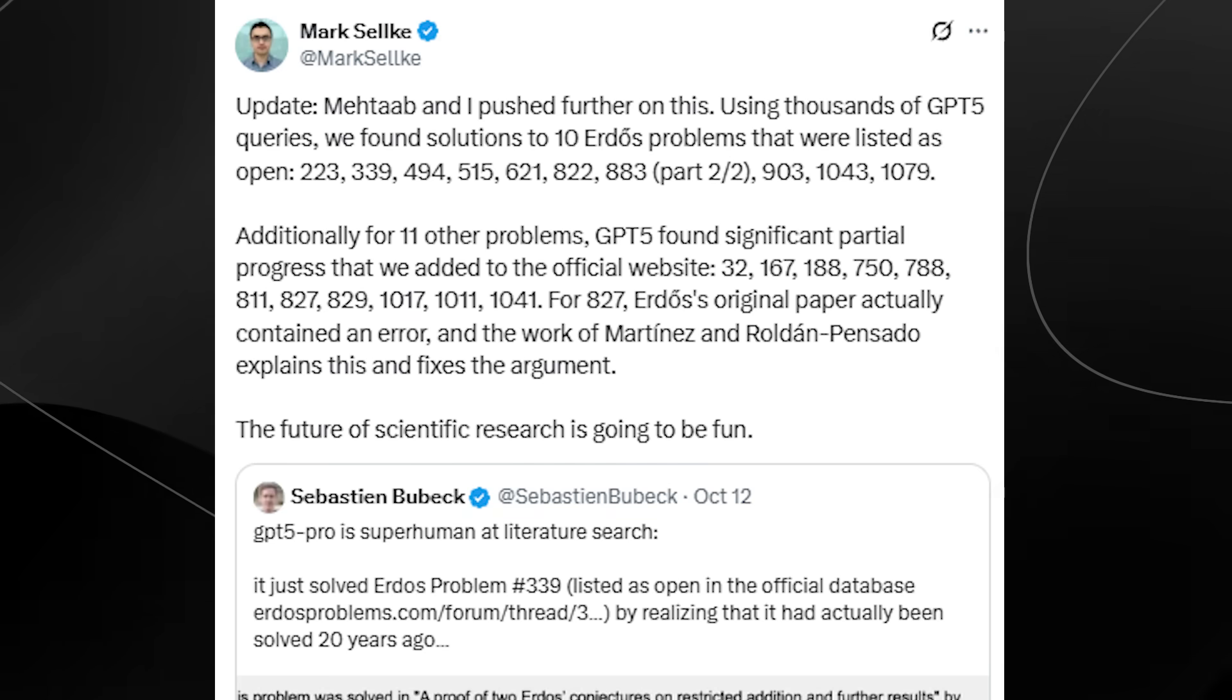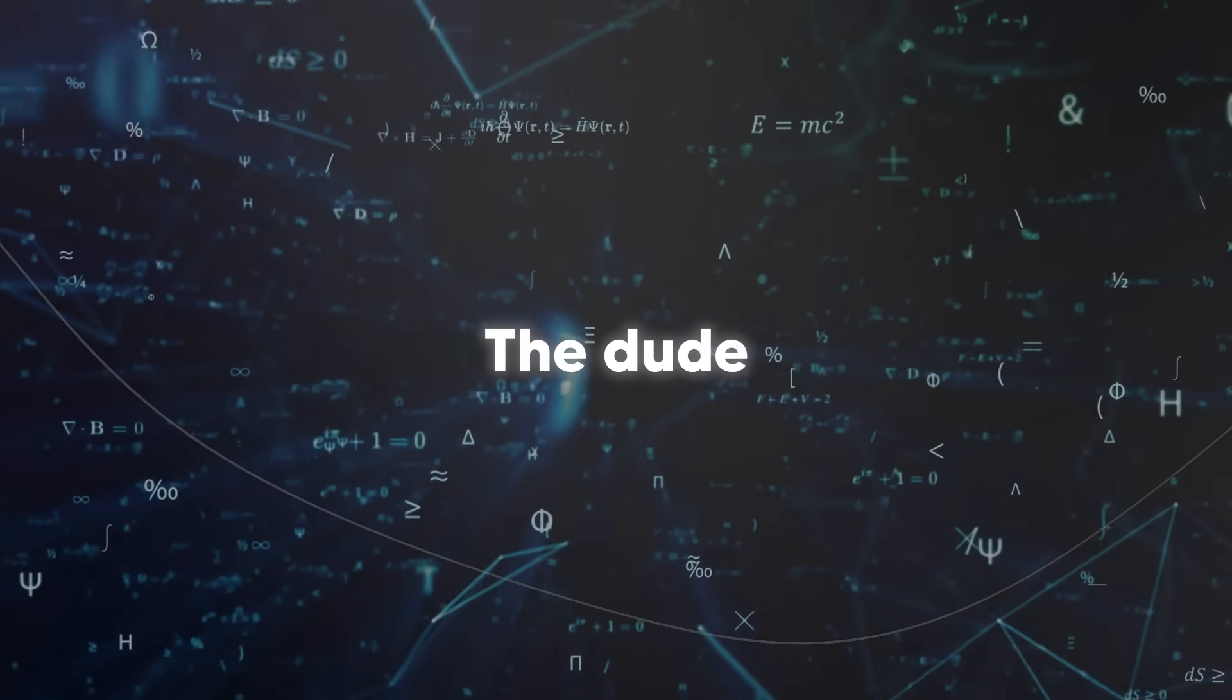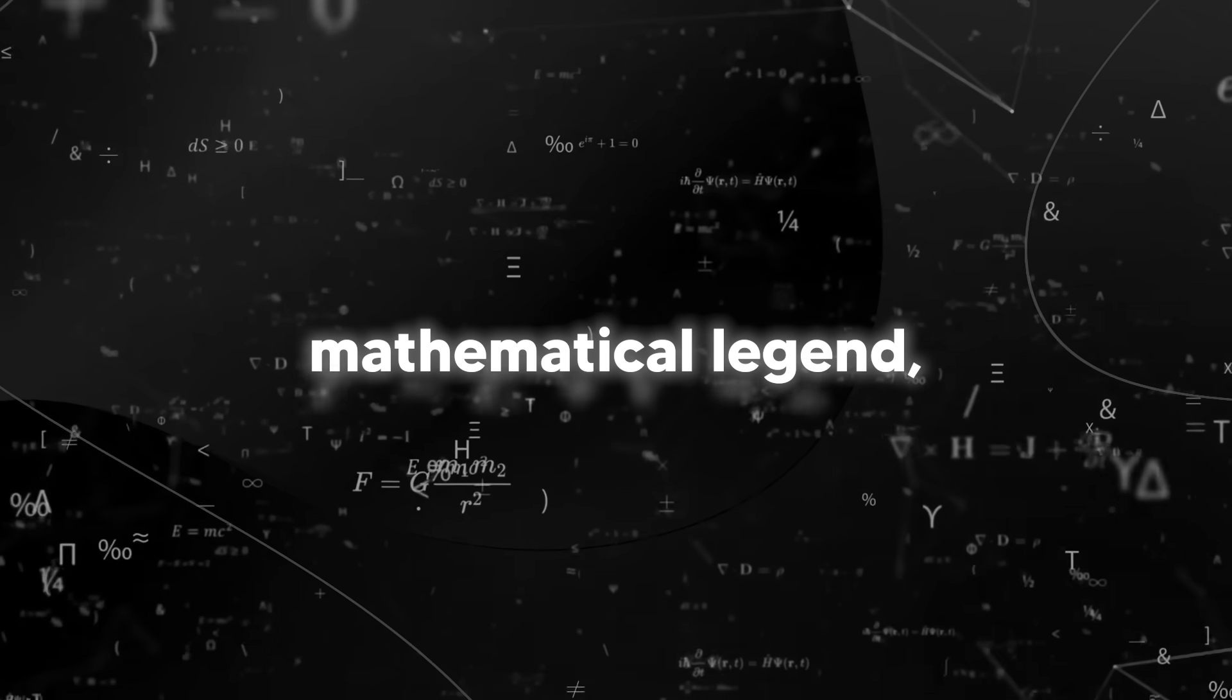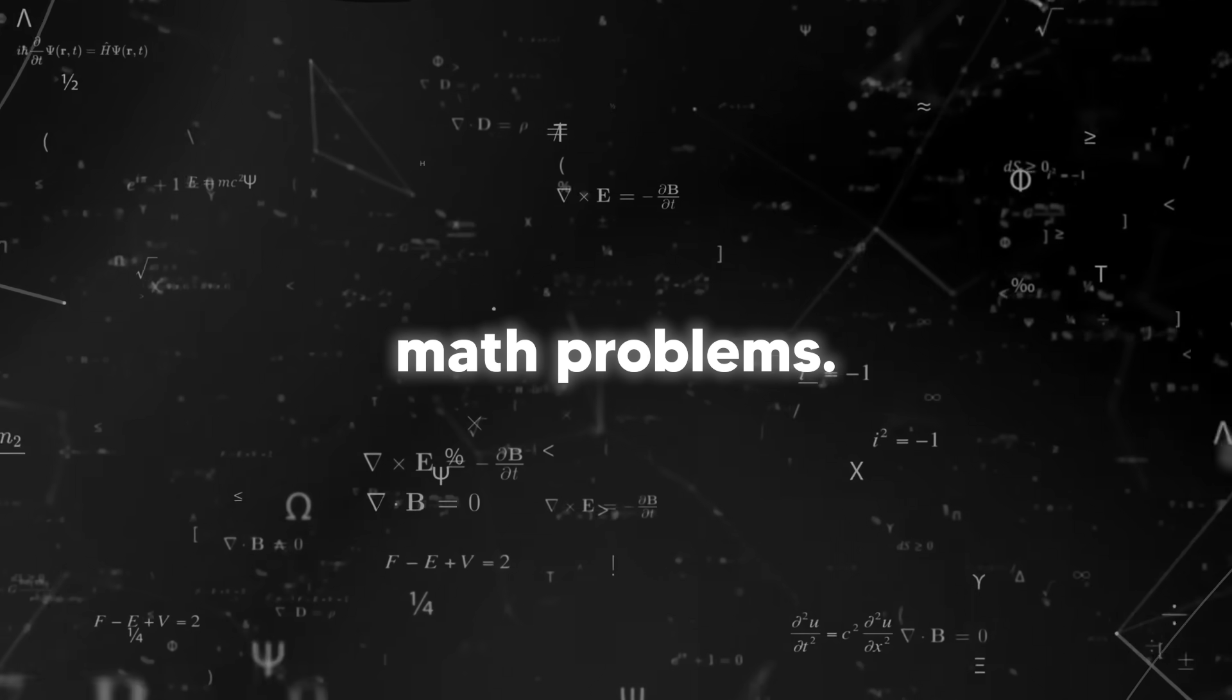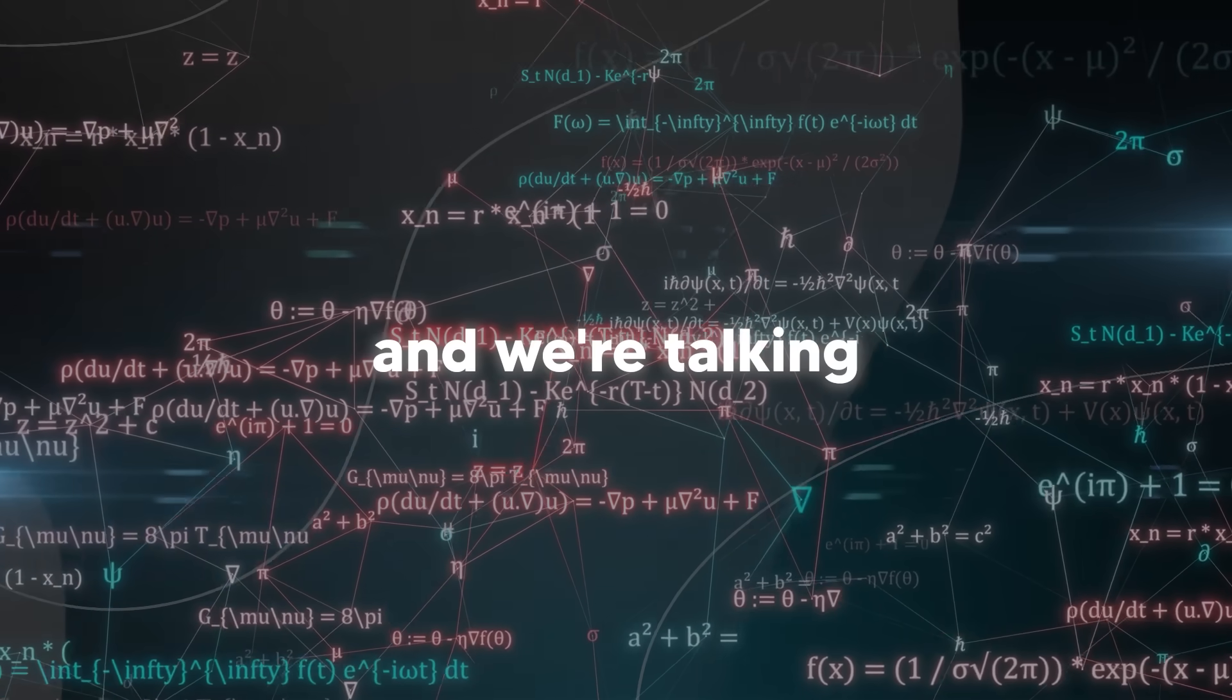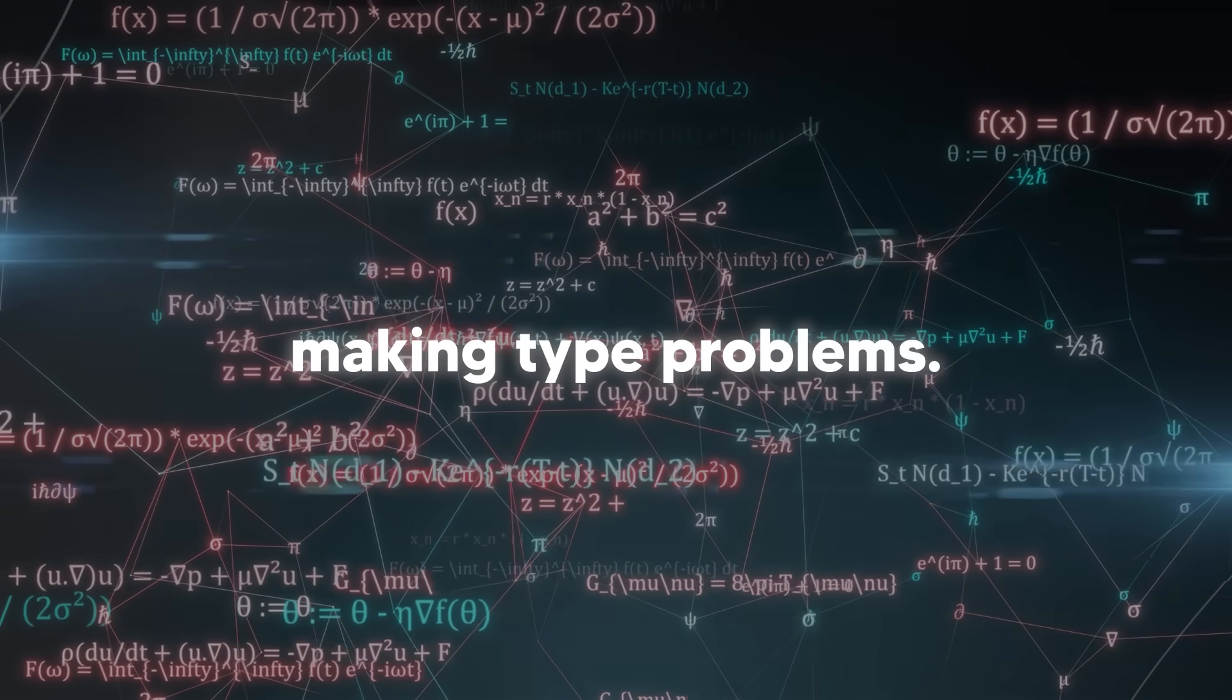Paul Erdős was this famous mathematician who literally spent his entire life traveling around, staying at other mathematicians' houses, and just doing math problems. The dude didn't even have a permanent home. He just lived out of a suitcase and basically did math 24-7. Some kind of mathematical legend, but crazy. Anyways, so this guy came up with hundreds and hundreds of unsolved math problems. These are problems that professional mathematicians have been trying to solve for decades, and some of them have prize money attached, we're talking thousands of dollars if you can solve them. These are hard problems, like PhD-level, career-making type problems.